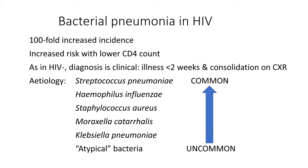I've listed the causative organisms from most to least common. Atypical bacteria seem to be very uncommon — that was one of the findings in our studies. We had hardly any people with atypical bacteria. There's some controversy about this; some studies have shown some, some have shown very little, but in our study we saw very little.